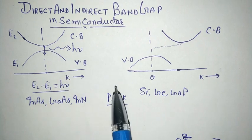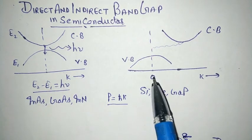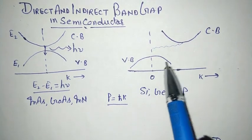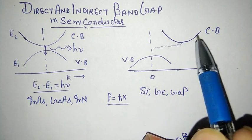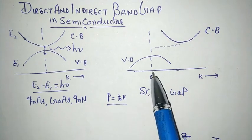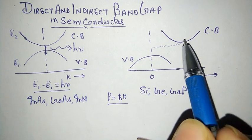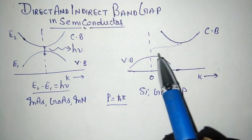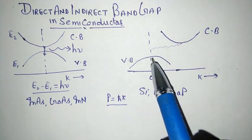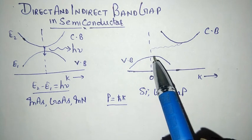For indirect band gap semiconductors: this is the valence band and this is the conduction band, plotted against the position of k, or momentum. During the transition from excited state to ground state there is a change in momentum, so there is no radiative emission in the form of a photon.